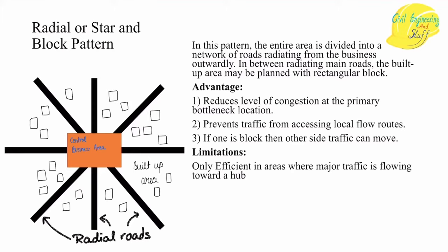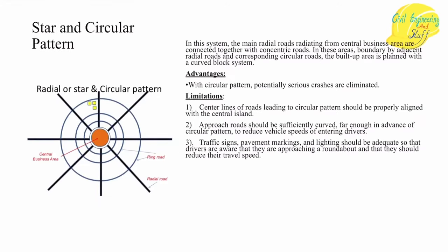The limitation of this road network is that it is efficient only when there is a central business area located in the city. If there is no central business area, the usefulness of this road pattern diminishes. Next, we have the star and circular pattern, which is quite similar to the previous one — it is again focused toward a central business area with a radial road network emerging from it. The key difference is that these major radial roads are interconnected by concentric circular road networks, with built-up areas situated in between these concentric circular roads, again interconnected by local streets.